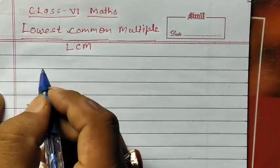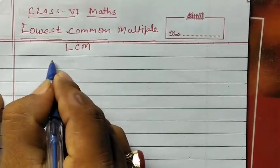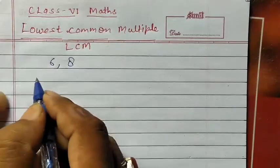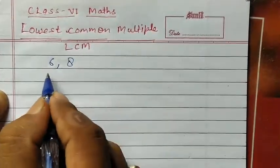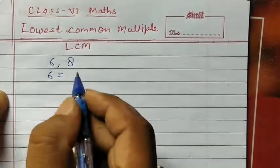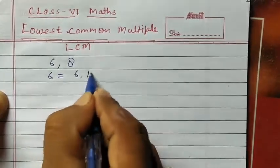For this, students, let's take any two numbers like 6 and 8. Now for Lowest Common Multiple, at first we'll write multiples of 6. Multiples of 6 are: 6, 12...